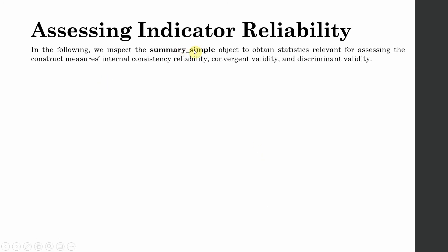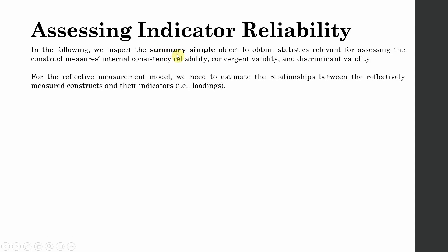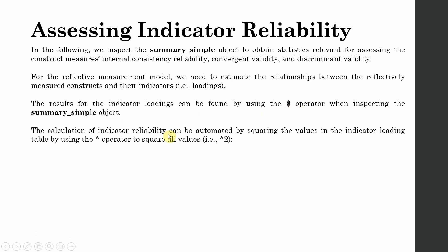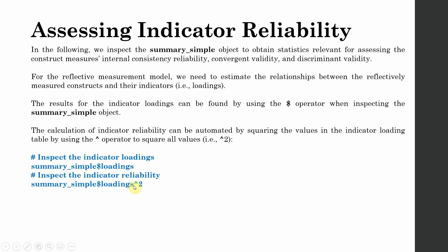To assess indicator reliability in SEMINR, we use the summary underscore simple object. Using the dollar sign with the summary underscore simple object, we can get our loadings and our indicator reliability — that is, the square of the loading.